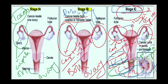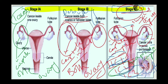Management of stage 1c is primary debulking plus adjuvant chemotherapy. Adjuvant chemotherapy involves six doses of carboplatin, with paclitaxel as the second-line drug. The main side effect of paclitaxel is bone marrow depression.